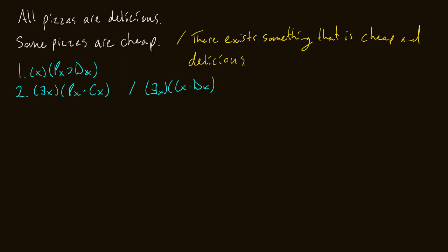Here's something wrong I'm going to demonstrate. Let's say I universally instantiate first — I universally instantiate line one using constant A: if A is a pizza, then A is delicious. Now what I'd want to do is existentially instantiate line two and use the same constant A: A is a pizza and A is cheap. Here's the issue: I did UI first and then EI. The UI is valid because for all x I can go to any constant, so I'm saying if A is a pizza then it's delicious. But then I existentially instantiated and said A is a pizza and A is cheap.